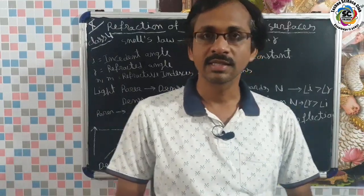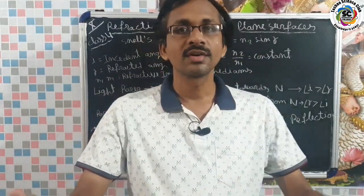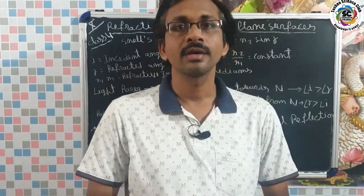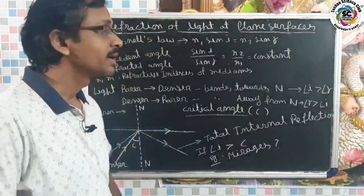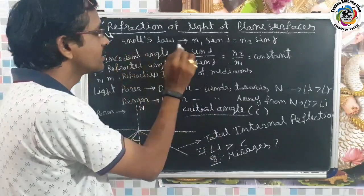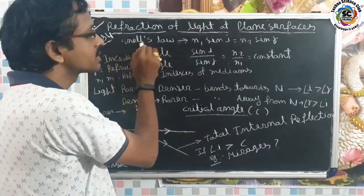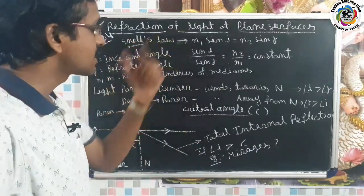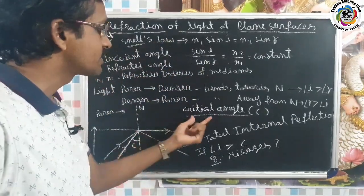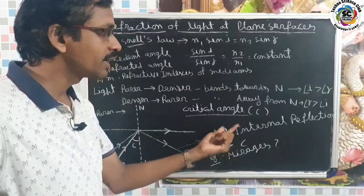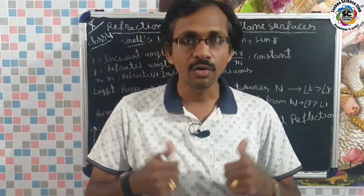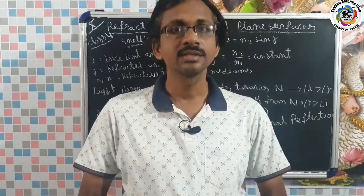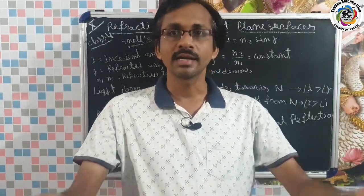Hello friends, welcome to Techno Science Club. Today's important and interesting topic is from 10th class: Refraction of Light at Plain Surfaces. This is class number four. In this class we learn about Snell's law, what is critical angle, and what is total internal reflection. Please see this video until the end, and please like, share and subscribe. Let's go into the topic.